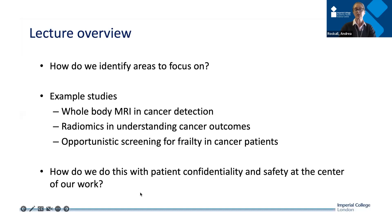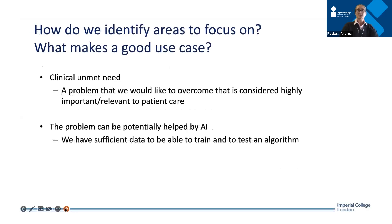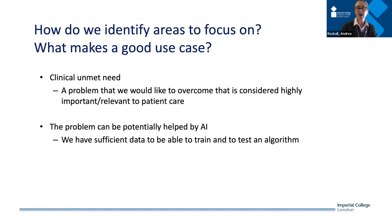I'd like to wrap up with how we do all of this bearing in mind that patient confidentiality and safety should be at the center of our work. So first of all, how do we identify areas to focus on? What makes a good use case? We always have to start with the important unmet clinical need — identifying a problem that is highly important and relevant to patient care, and that we're struggling with.